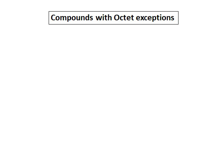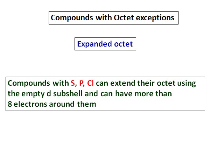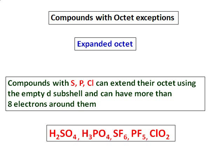Let's look at some Lewis structures with our exceptions. One of the cases we'll be considering is expanded octet. There are cases in which the central atom has more than 8 electrons around it. Compounds that have sulfur, phosphorus, or chlorine usually can extend their octet.